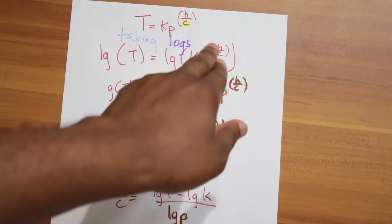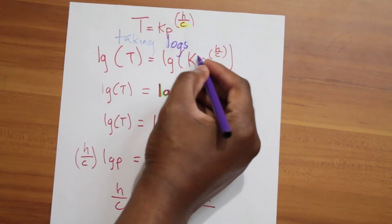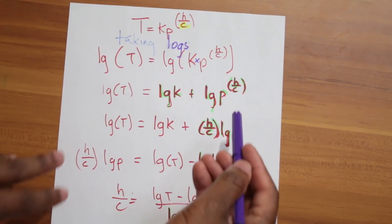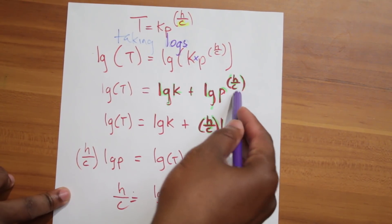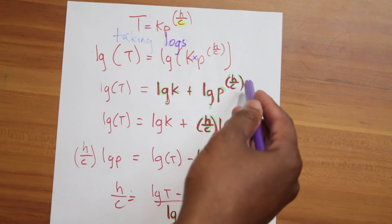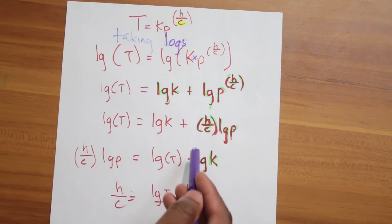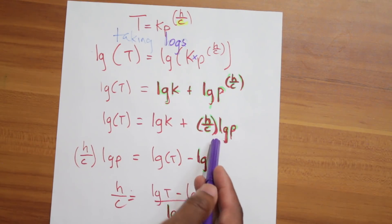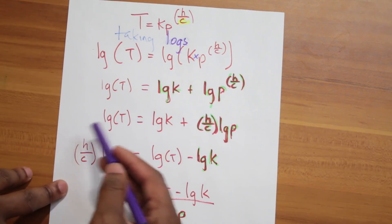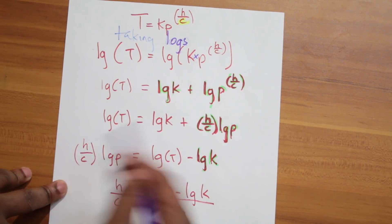Using the rules of logs you can split this because there's a multiplication: k multiplied by p to the power of h over c. Split it up and use the rule: if you have log of a to the power b, you can bring down the b, so that's b times log a. Check out your log rules and make sure you know that. Then rearrange — take log k and send it to the other side, so now it's log t minus log k.